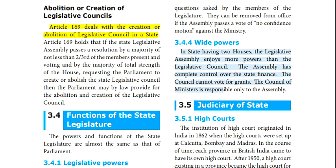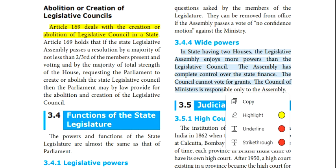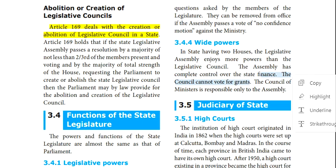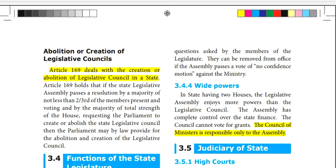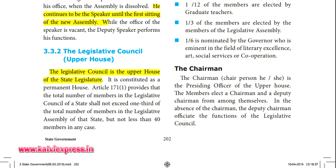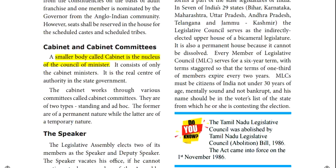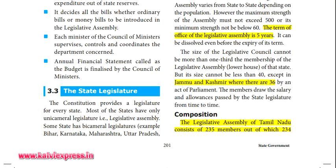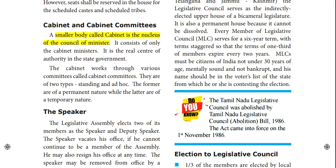States having two houses — MLA and MLC — show that MLA has a lot more power. MLCs cannot vote on grants and cannot vote on the Council of Ministers. Topics covered include the creation or abolition of MLCs, the number of members, the cabinet, state legislation, MLA, Speaker, and Chairman of the MLC.